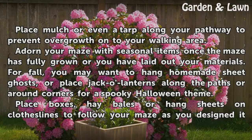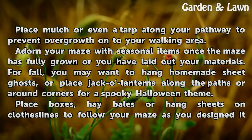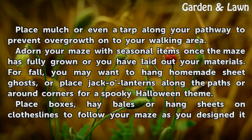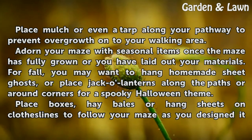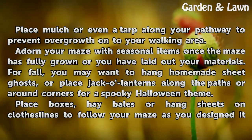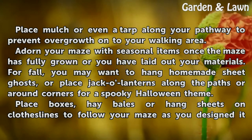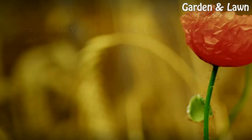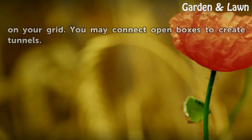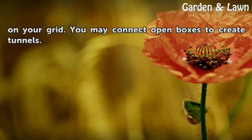Adorn your maze with seasonal items once the maze has fully grown or you have laid out your materials. For fall, you may want to hang homemade sheet ghosts or place jack-o-lanterns along the paths or around corners for a spooky Halloween theme. Place boxes, hay bales or hang sheets on clotheslines to follow your maze as you designed it on your grid. You may also connect open boxes to create tunnels.